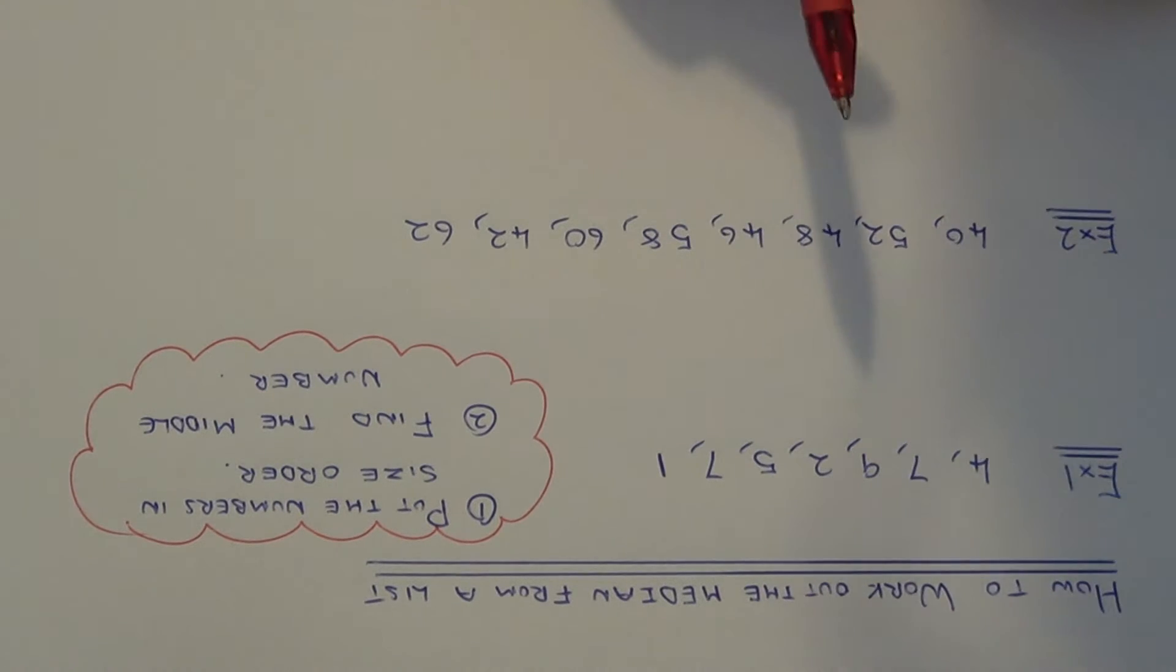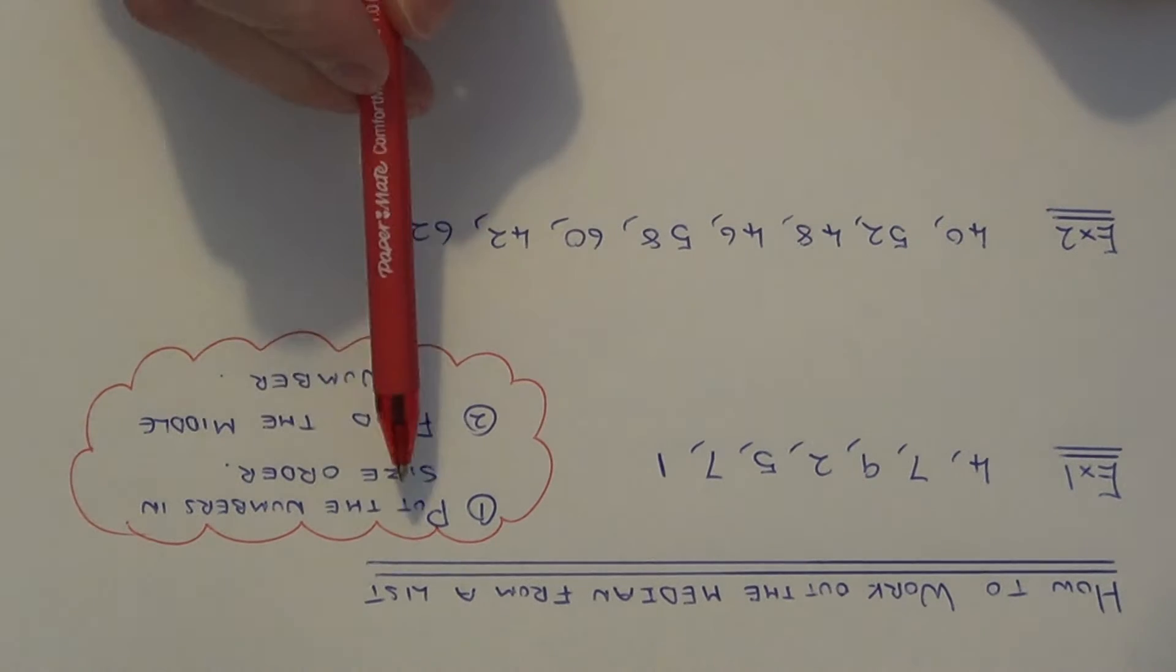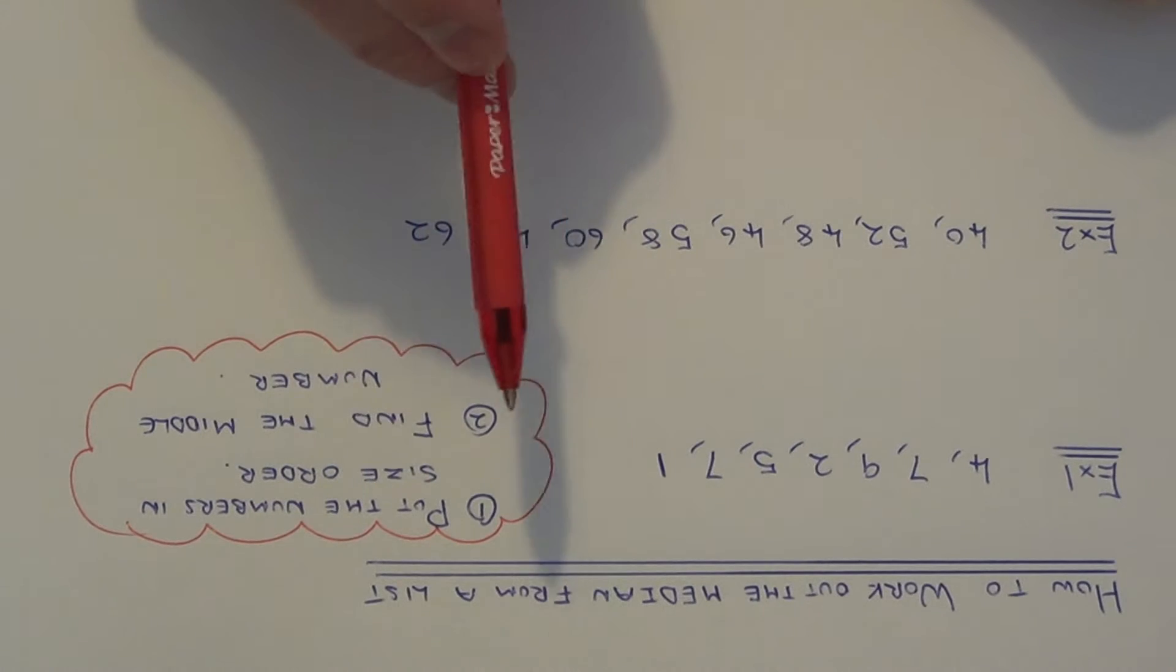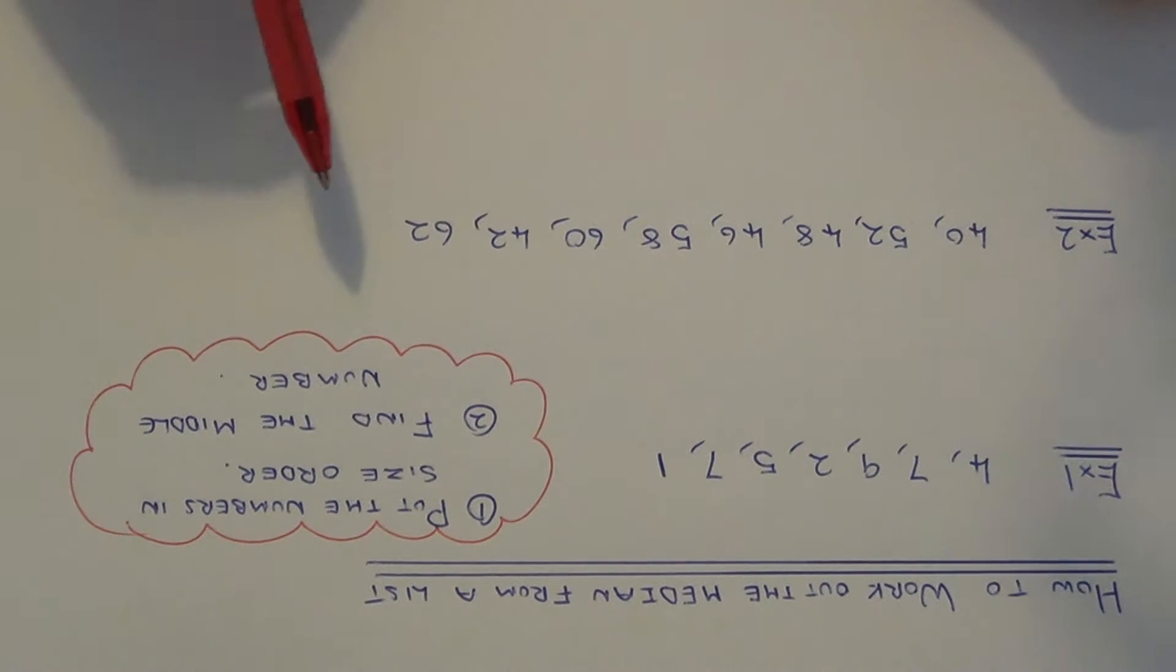If you have to work out the median from a list of numbers, there are two steps to follow. First of all, you need to put the numbers into size order. So start with the smallest and work your way up to the largest.